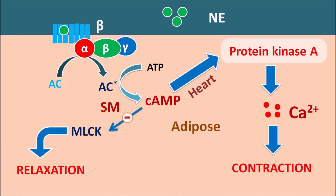Cyclic AMP can also act on adipose tissue, where it increases lipolysis by acting through protein kinase A. These are the various actions of the beta receptors coupled with increased levels of cyclic AMP. Alpha-1 receptors are coupled with IP3 and diacylglycerol, which produce excitation. Beta receptors are coupled with cyclic AMP — producing contraction in the heart, relaxation in smooth muscle, and lipolysis in adipose tissue. Alpha-2 receptors result in a decrease in cyclic AMP levels. When cyclic AMP levels are reduced within neurons, it results in reduced calcium levels, which leads to reduced exocytosis. Alpha-2 receptors are therefore inhibitory in nature and inhibit the release of neurotransmitters.